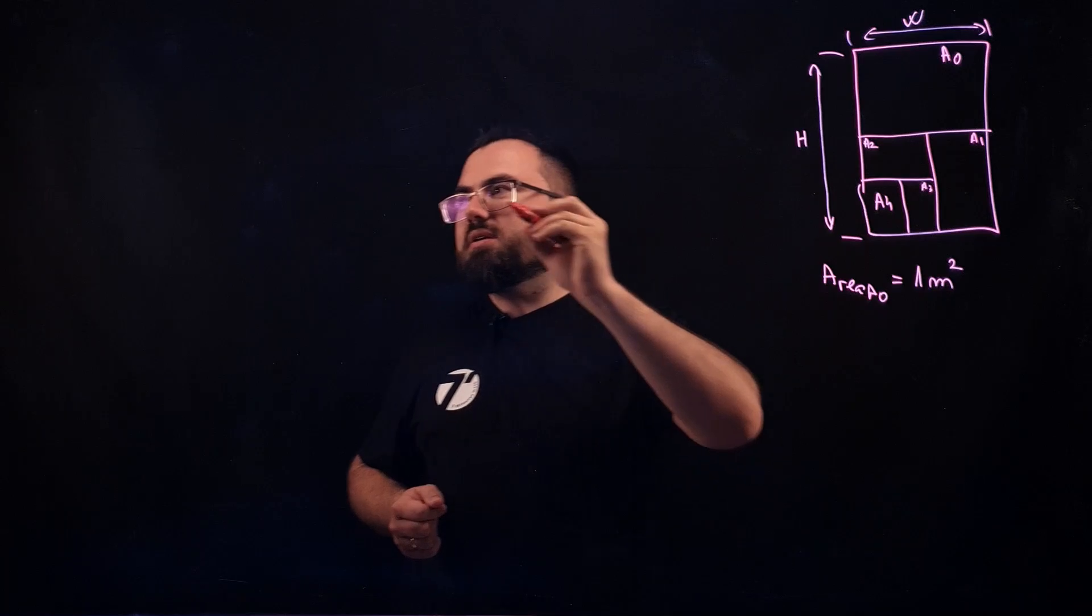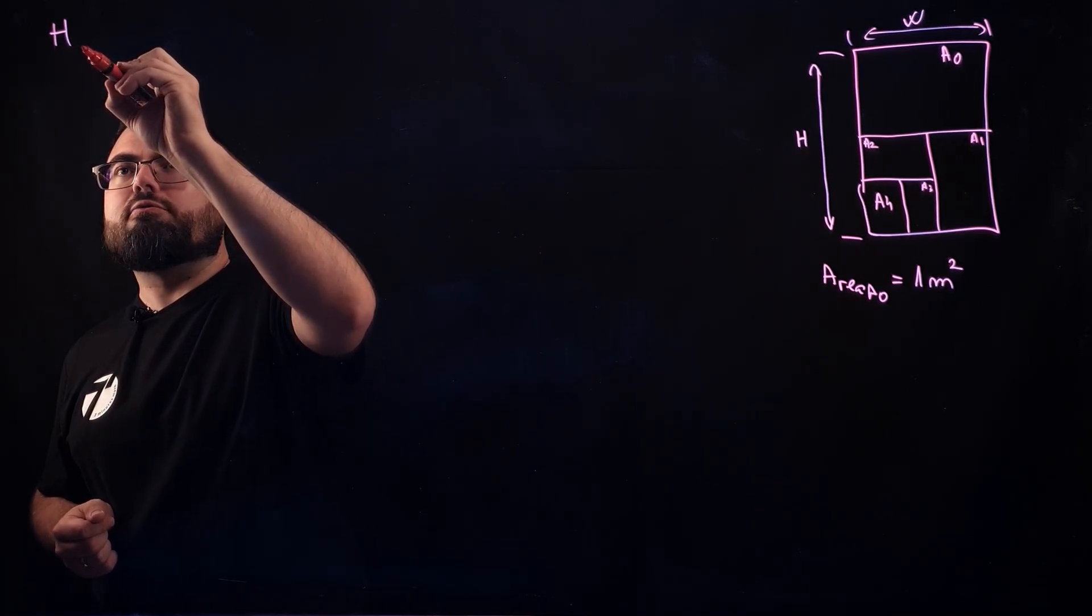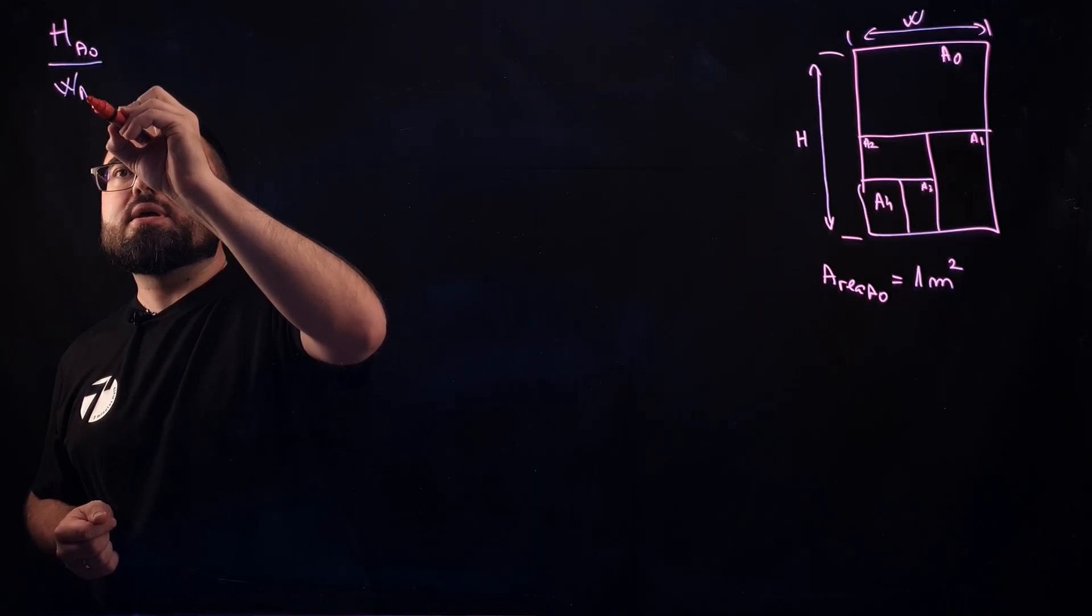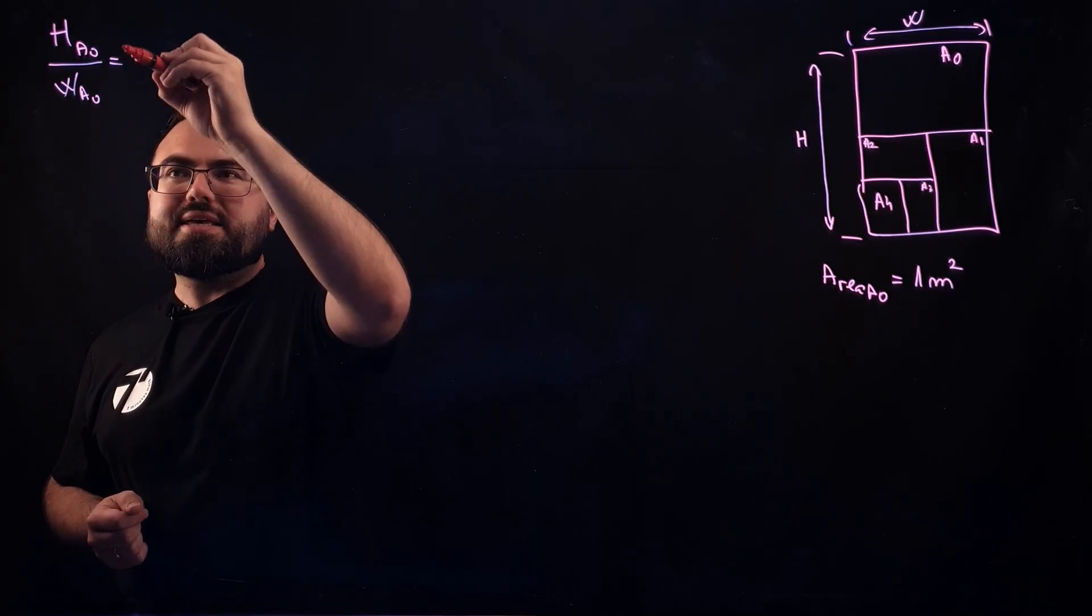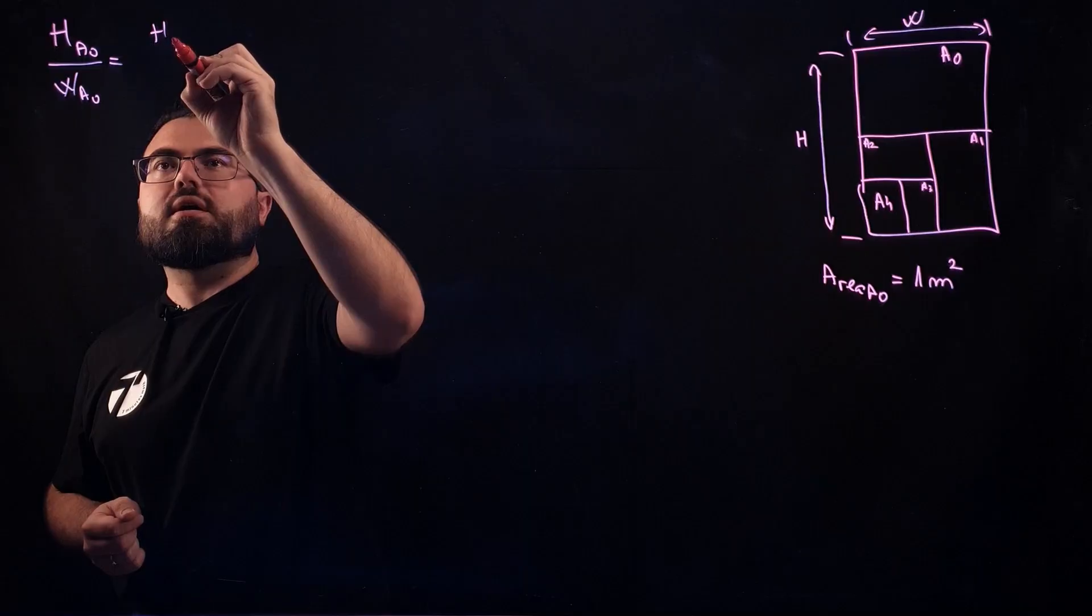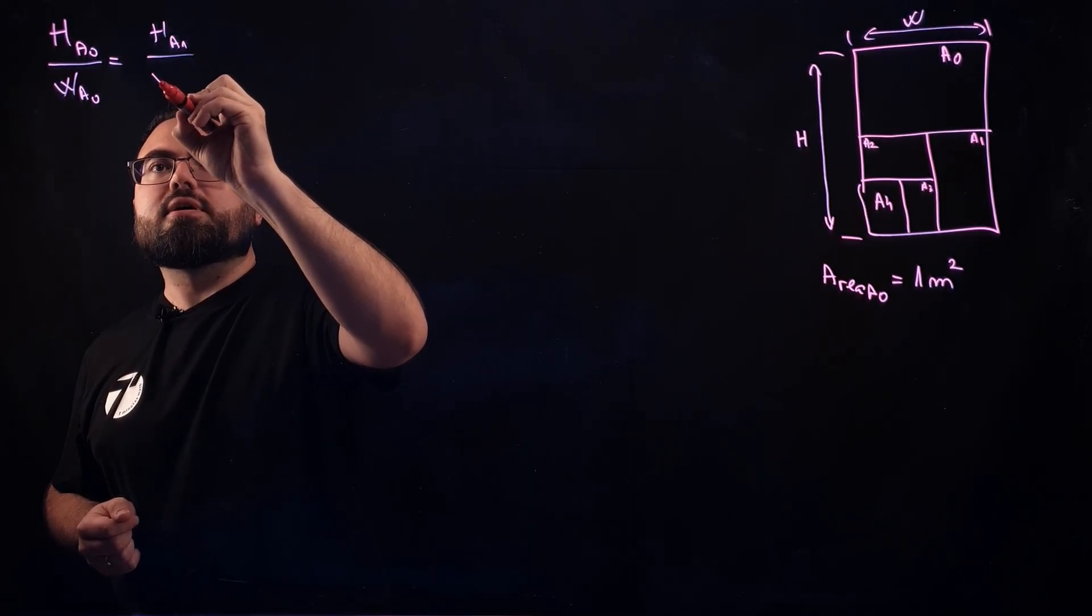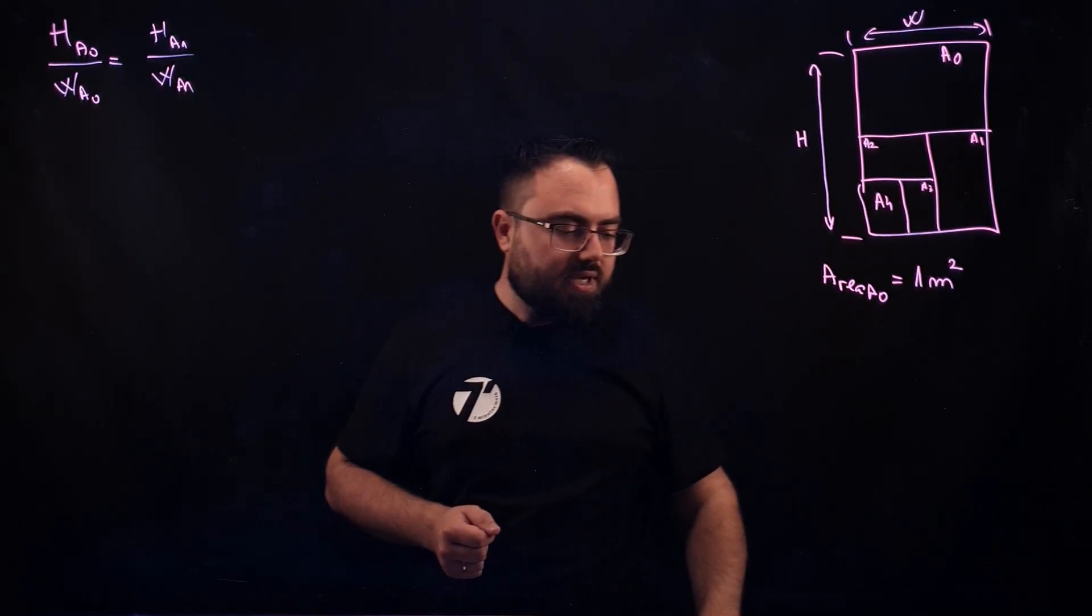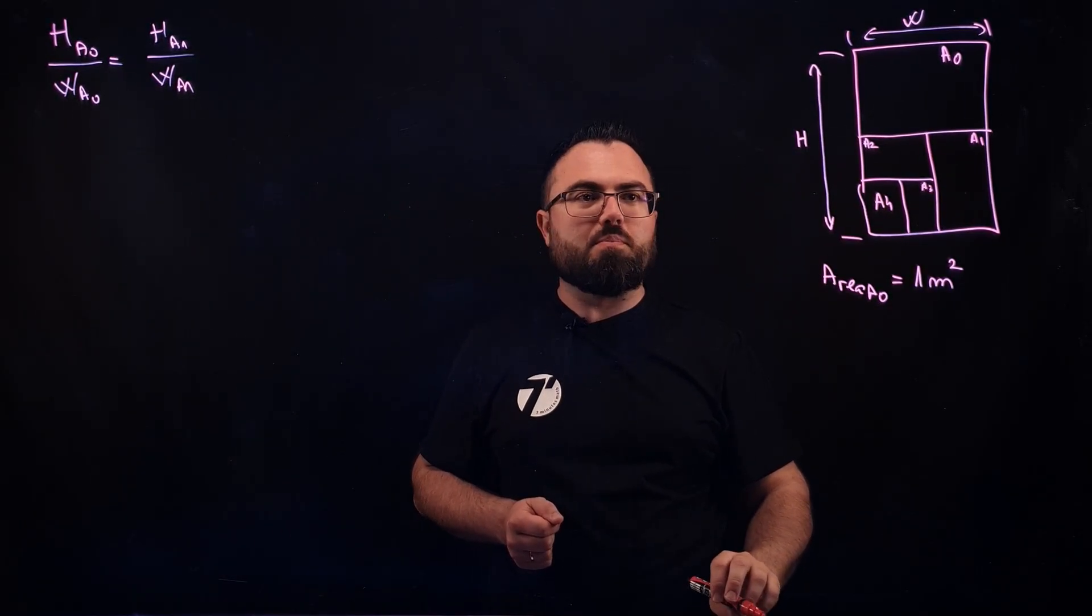That means that actually the height of an A0 divided by the width of an A0 will keep the same proportion as in height of an A1 divided by the width of an A1. Let's see what that actually means.